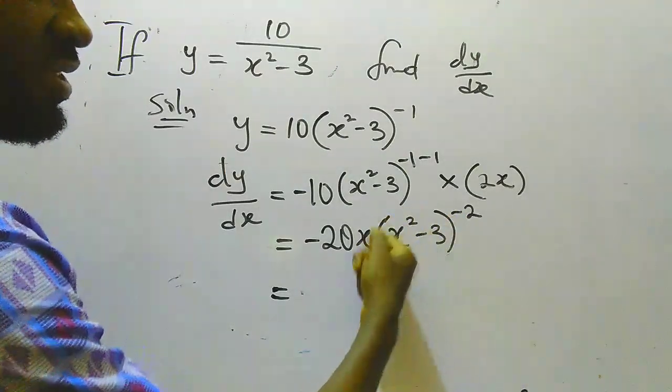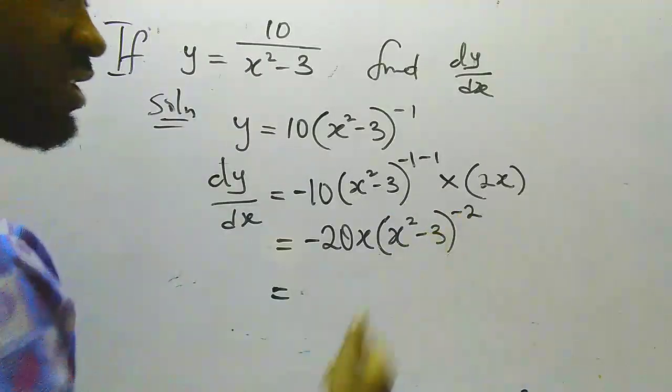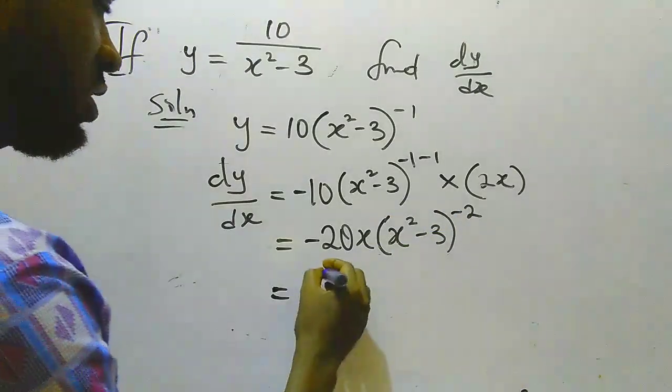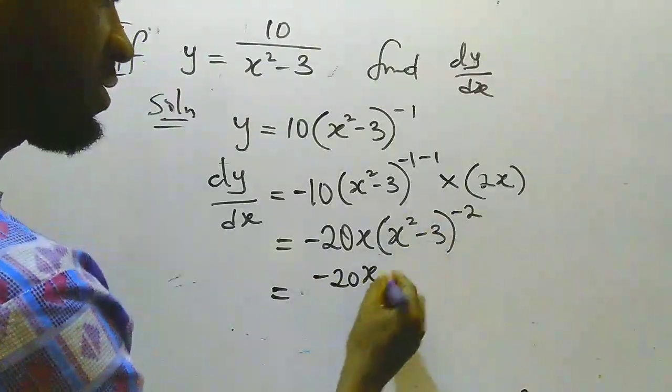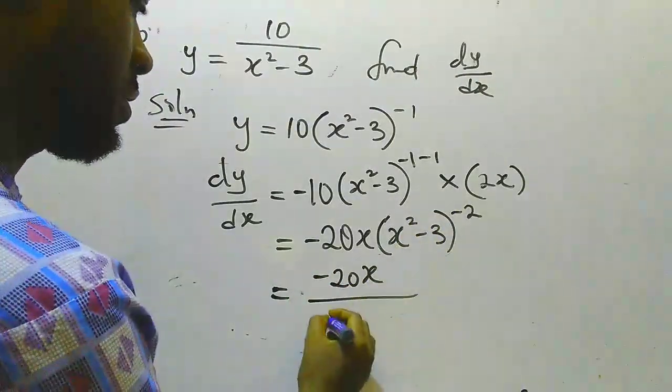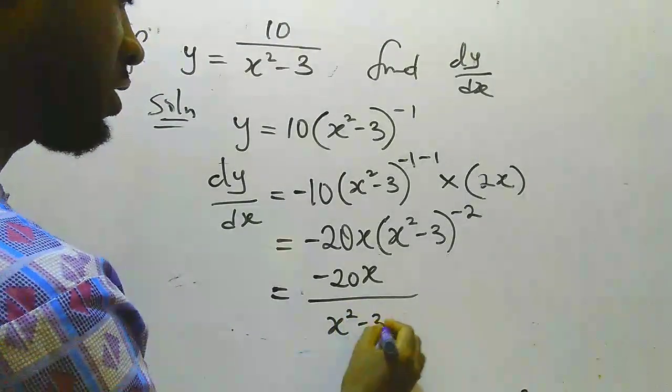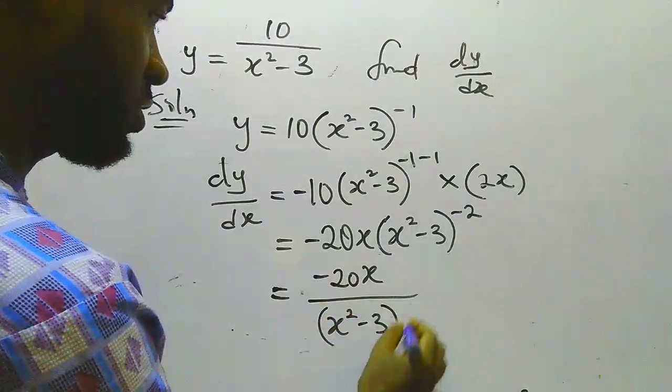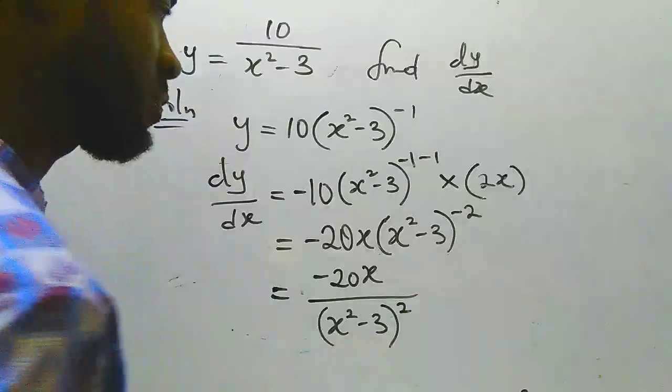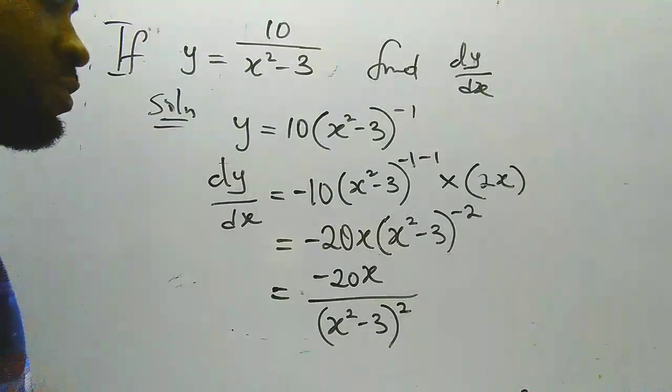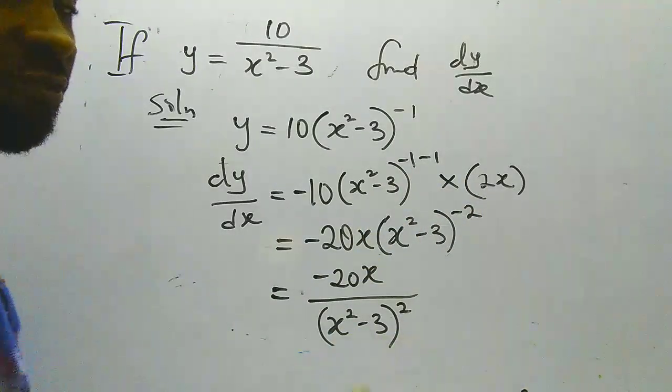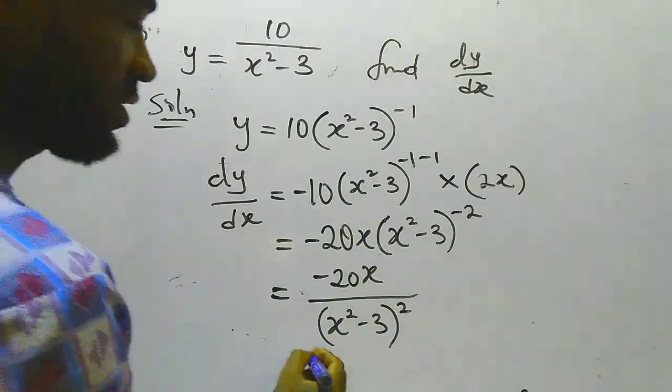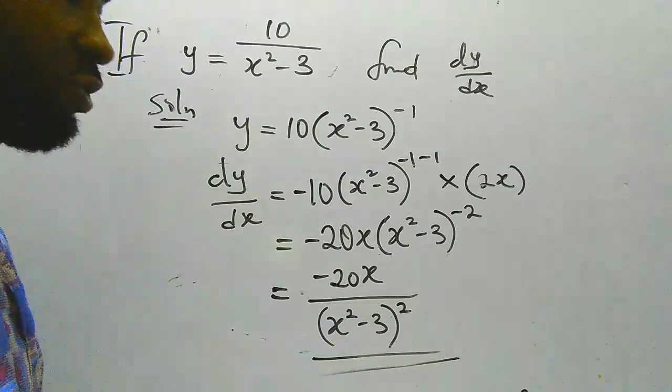So we are going to take this x squared minus 3, put it at the denominator, raise to the power of 2. So you can see that our 2 no longer has the negative sign because we have transformed it into a fraction. So this is our solution.